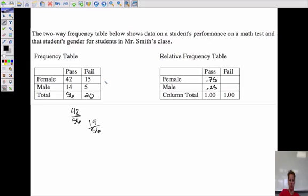Here, the number of females that failed would be 15 out of the 20 that failed. That would be 0.75. And 5 out of the 20 would be 0.25. So the breakdown's there.